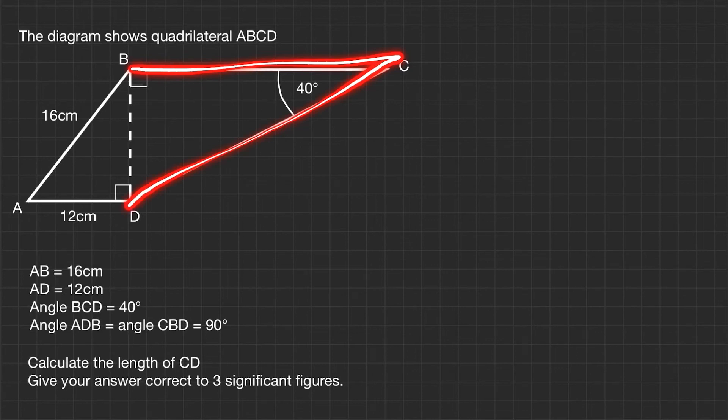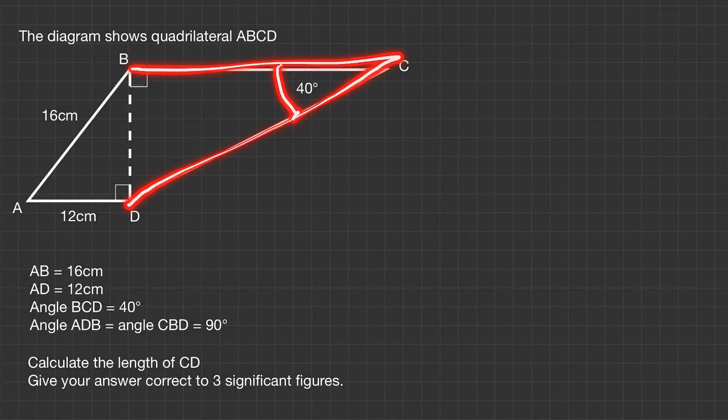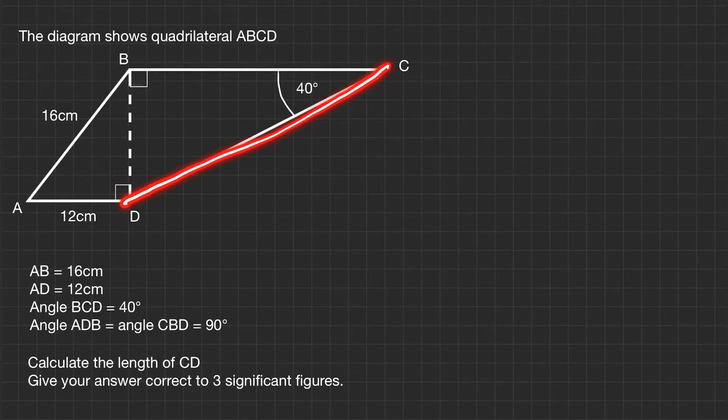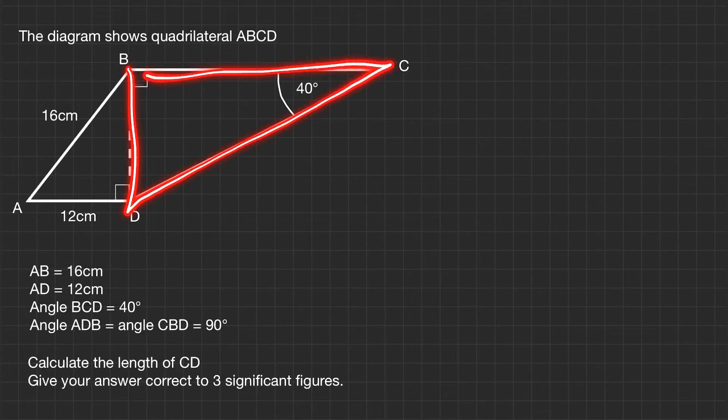Angle BCD is 40 degrees. Angle ADB equals angle CBD, which equals 90 degrees, also denoted by these two here. Calculate the length of CD. Give your answer correct to three significant figures. This is quite a big question. If we just focus on this triangle, we've got an angle of 40 degrees. We want to find this length CD, but we've got no measurements to go on in terms of sides.